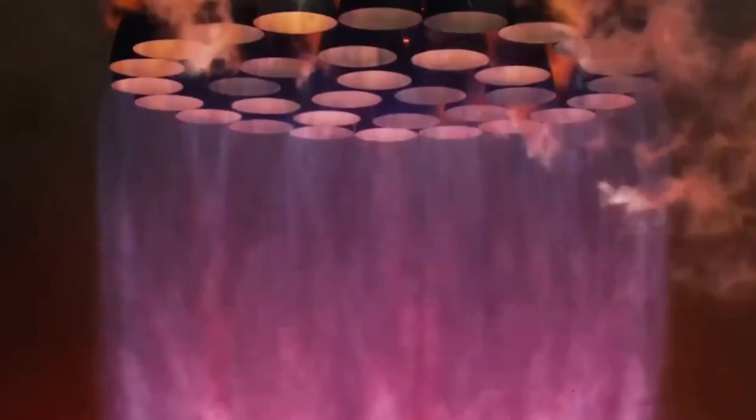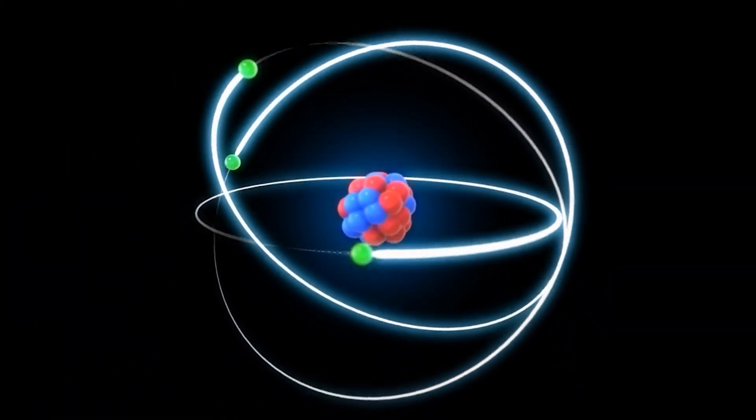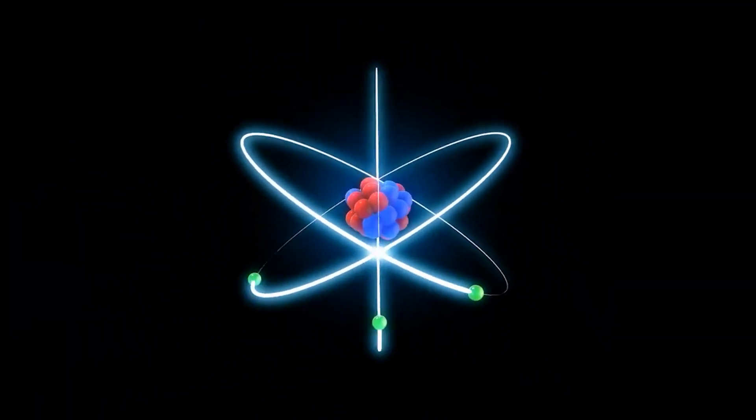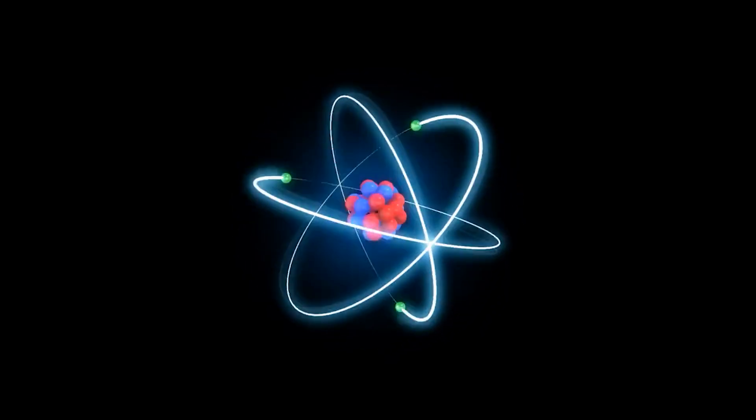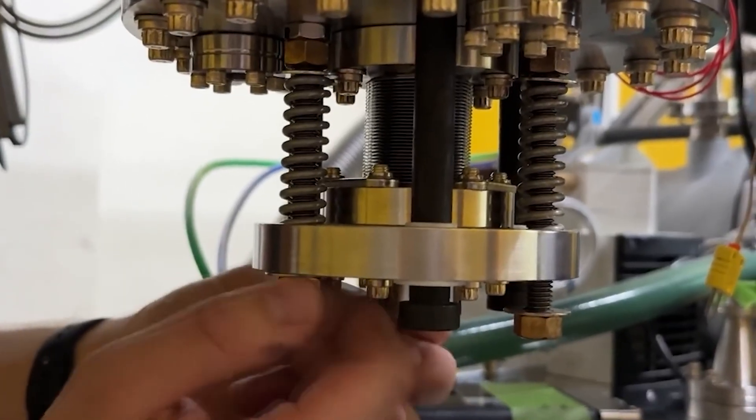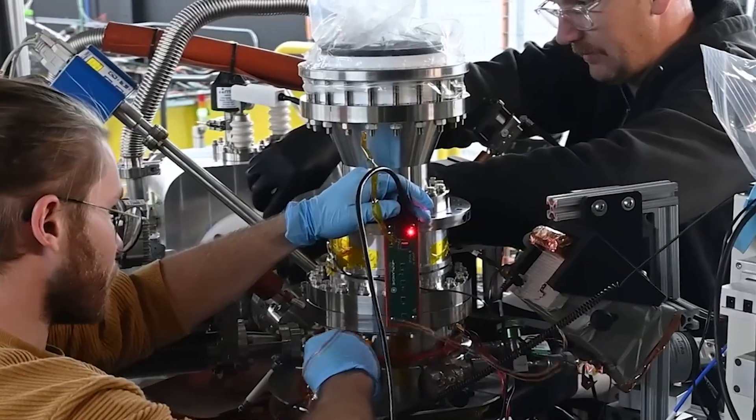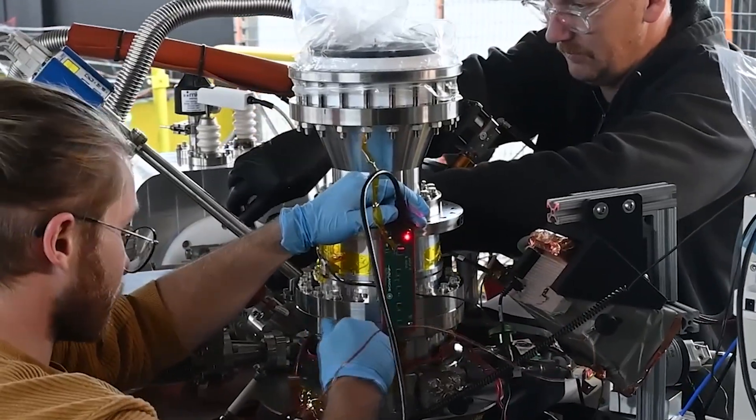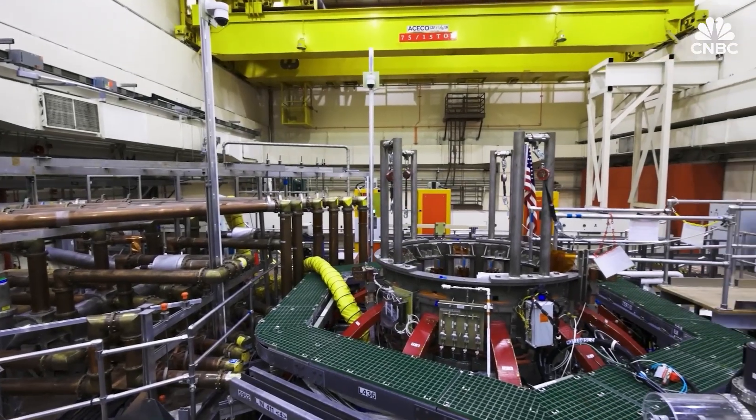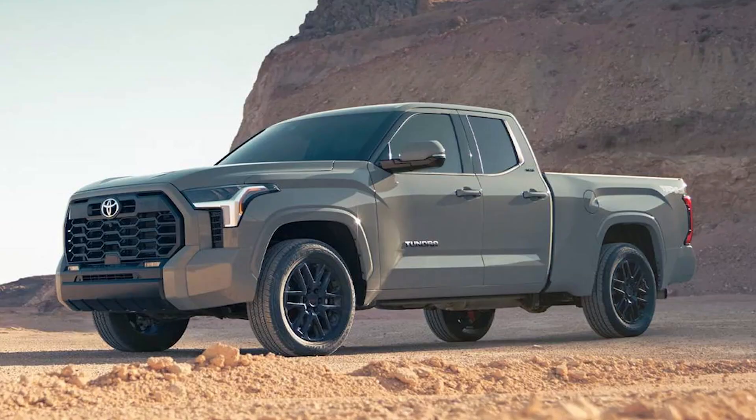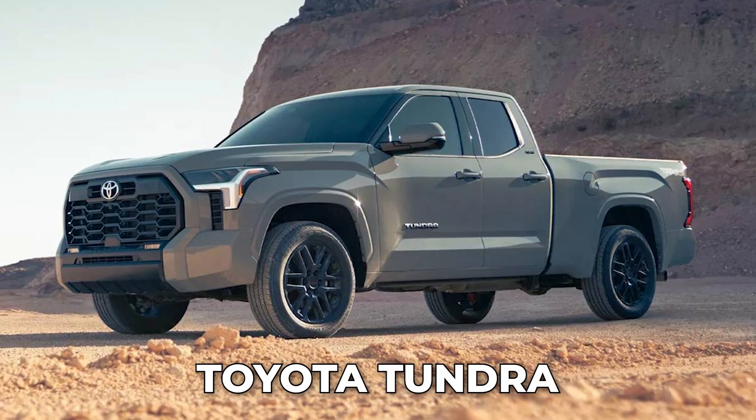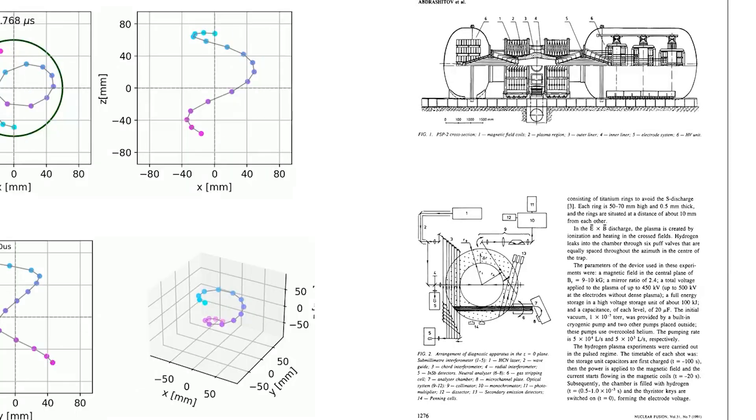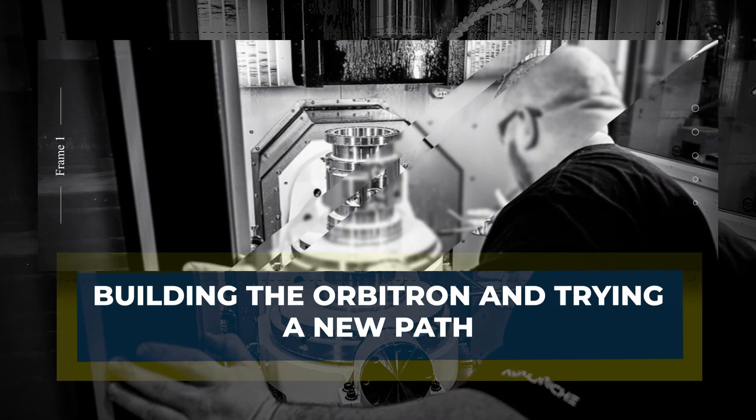Fusion itself is simple to describe: two small atoms fuse and release huge energy. But building a machine that is small, affordable, and fast to iterate is extremely hard. Most designs are huge and slow. The team wanted something compact, no bigger than a Toyota Tundra. That goal shaped everything and forced them to rethink what a fusion device could be.